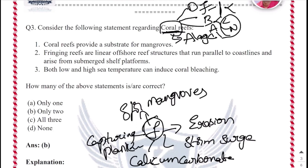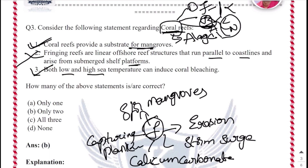Now let us evaluate the statements. Statement 1: Coral reefs provide a substrate for mangroves — this is correct as seen in the functions. Statement 2: Fringing reefs are linear offshore reef structures that run parallel to the coastlines and arise from submerged shelf platforms — this is not correct because this describes barrier reefs. Statement 3: Both low and high sea temperatures can induce coral bleaching — this is correct. Two statements are correct, so the correct answer is option B.